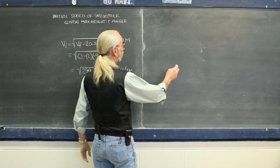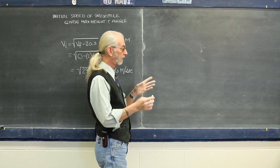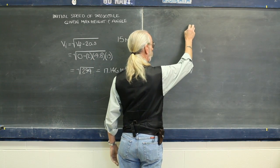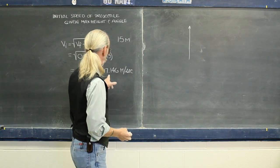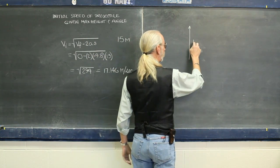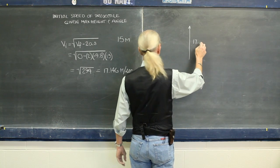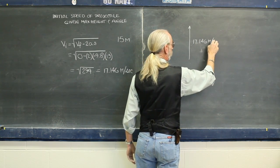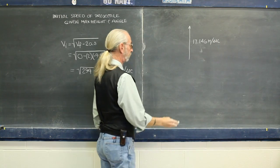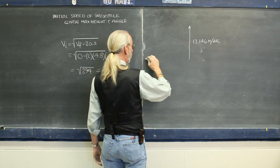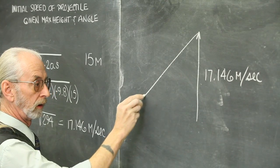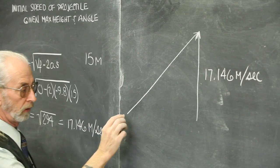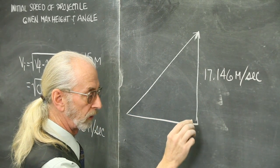Now, here's where we pull in a little bit of trigonometry. We had this projectile going in this direction initially with a velocity of 17.146 meters per second. But actually, we assume it was doing something like this. This is where we bring in a little bit of trigonometry.